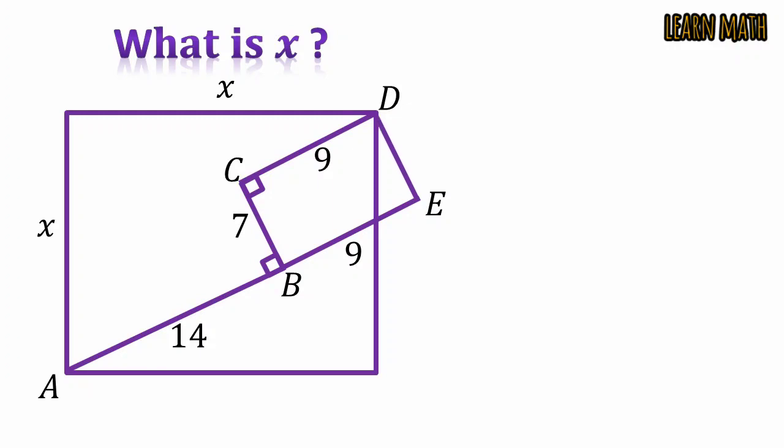Where BC is equal to ED and angle BED is also a right angle because ED is parallel to BC. Now we will remove the line BC and CD and the question is transformed into this form. Now draw a line from E to D.